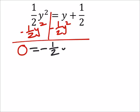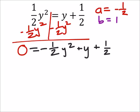So that gives me zero equals negative one-half y squared plus y plus one-half. This is okay because now it shows that a is a negative one-half, b is one, and c now is a positive one-half.